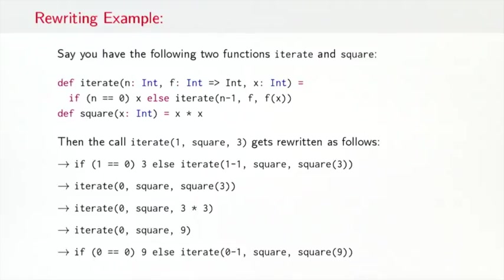An arithmetic simplification gives you this line here, where the 3 times 3 has been reduced to 9. Now you would have another expansion of iterate, so the right-hand side of iterate would again show up here with the actual arguments replacing the formal parameters. And some subsequent reductions on the if would finally give you if 0 equals 0, that's true. So you would return the then part, and that would be 9.